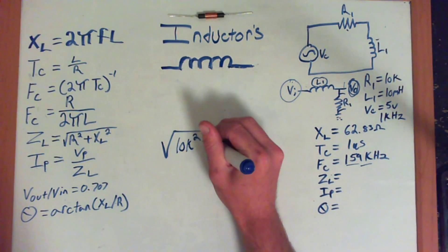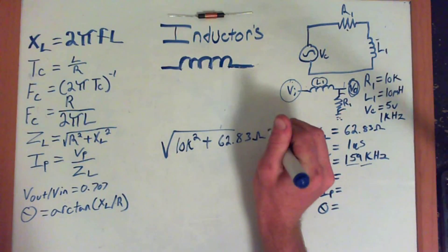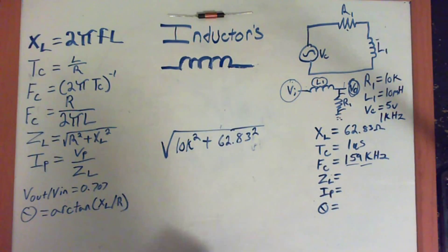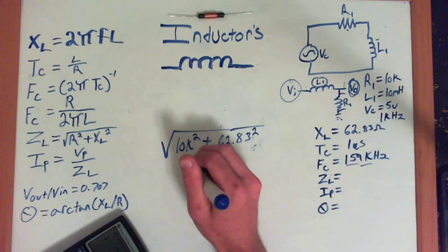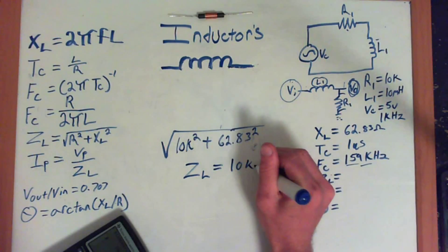10K squared plus the XL, which is 62.83 ohms, squared. Let's go ahead and punch it in the calculator and see what we get. So, square root of 10,000 squared plus 62.83 squared, close parentheses, and that's going to be 10,000. Awesome. So, our impedance for this circuit is going to equal 10K ohms.